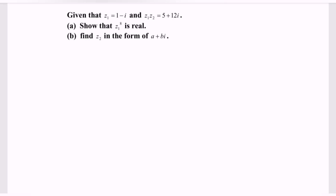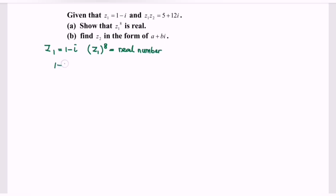Kindly focus on the first part, where we have z sub 1 is equal to 1 minus i. The question asks us to show that z sub 1 to the power of 8 is a real number. So kindly substitute, giving us 1 minus i to the power of 8.